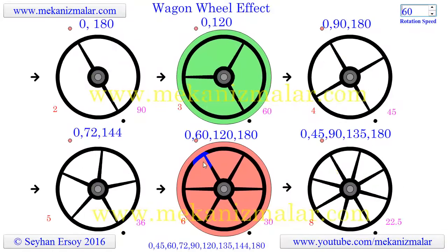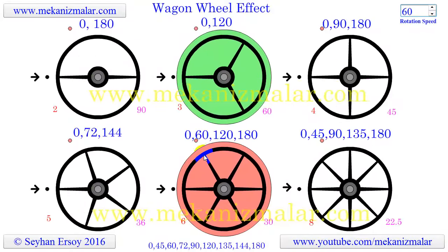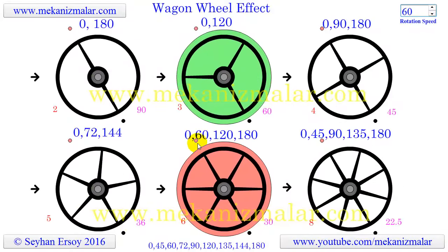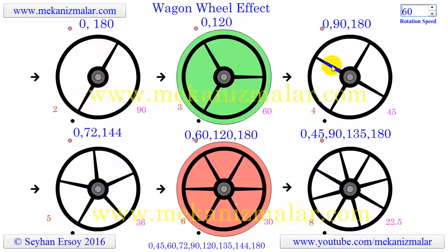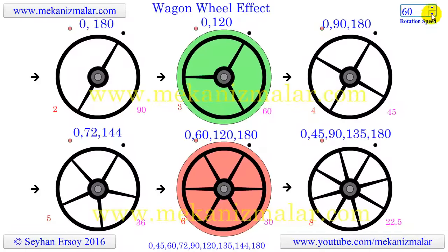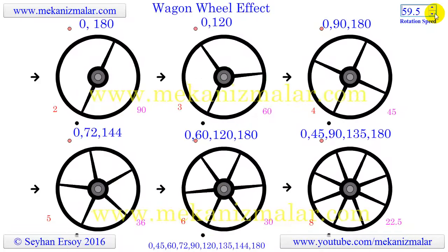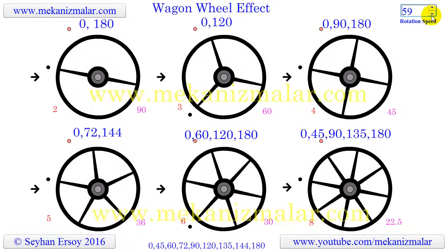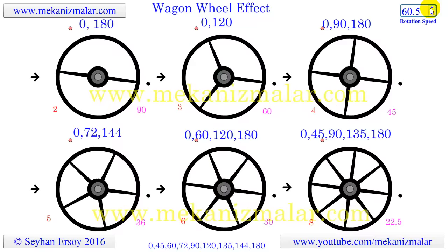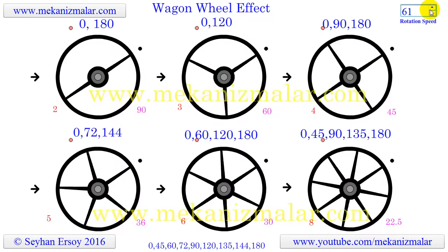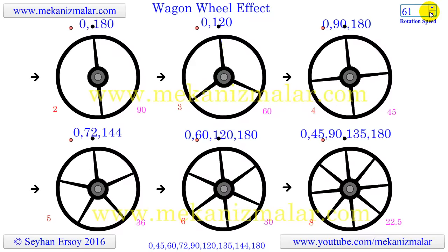We think that the wheel is standing still. However, if the angle is 59 degrees it will seem like the wheel is rotating backwards, and for 61 degrees it will seem like the wheel is rotating forward very slowly.